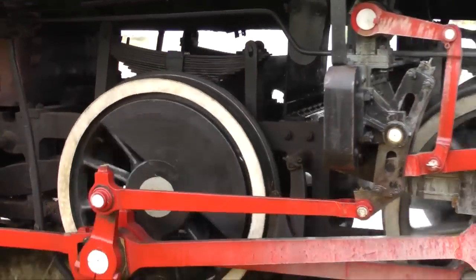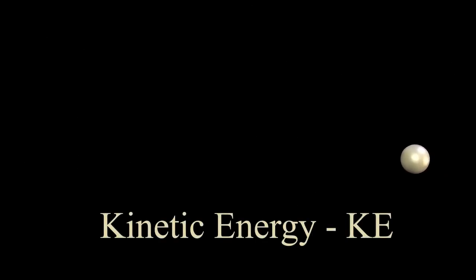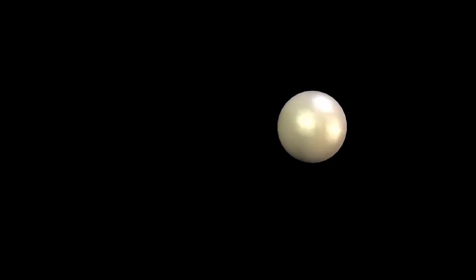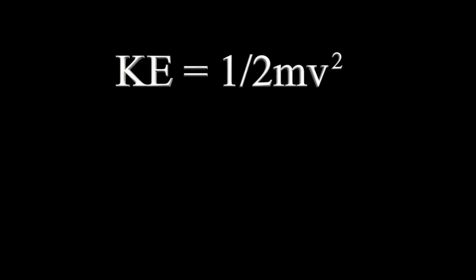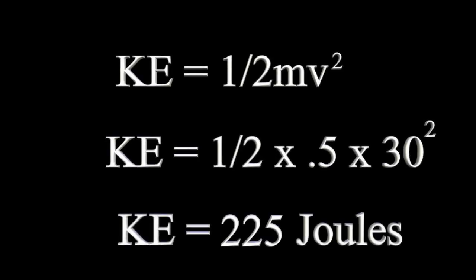For instance, scientists have come to a consensus that a moving object has kinetic energy, energy of motion. We can represent that energy with the formula one half mv squared. m representing the mass of the object, v its velocity. A ball with a mass of 0.5 kilograms moving at 30 meters per second has a kinetic energy of 225 joules.